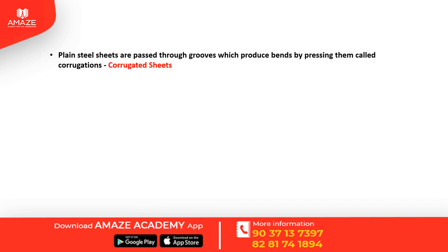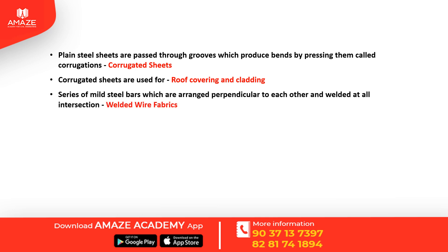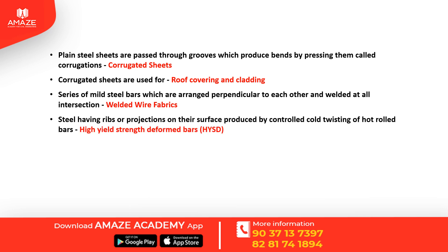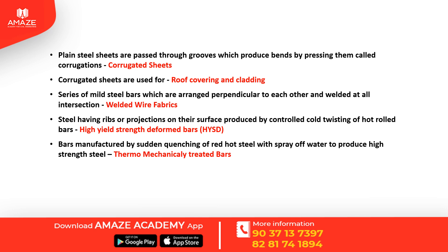Corrugated sheets are plain steel sheets formed into corrugations, grooves, and bends, used in roof covering and cladding. Welded wire fabrics are mild steel bars arranged perpendicularly and welded at all intersections. High-yield strength deformed (HYSD) bars are hot-rolled bars produced by controlled cold twisting with surface ribs and projections. Thermo-mechanically treated (TMT) bars are produced by exposing red-hot steel suddenly to cold water, giving high strength. Tor steel is also known as cold twisted deformed bars.